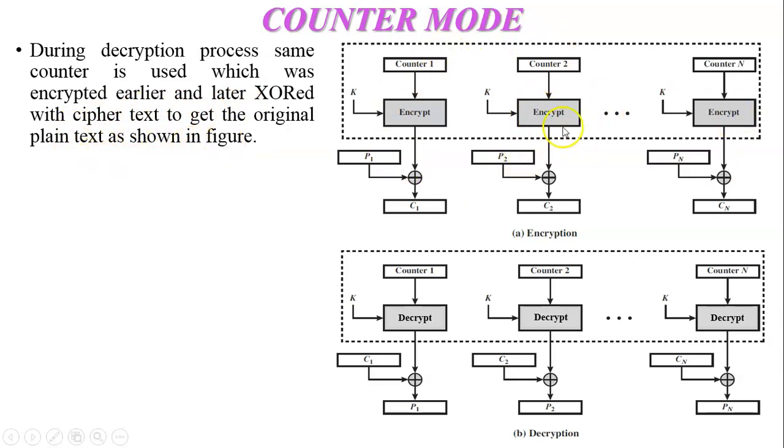Now this above is the encryption process and below is the decryption process of the counter mode. Here you can see this is counter one for the encryption process. Similarly in the reverse process to generate plaintext from the ciphertext counter one is used. So both the counters are same for the encryption and decryption process and key K is also the same for the encryption and decryption process.